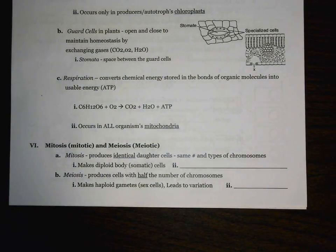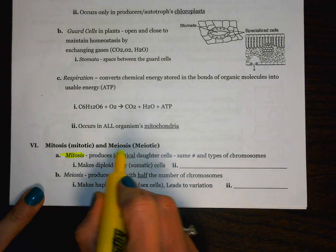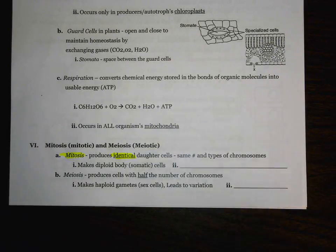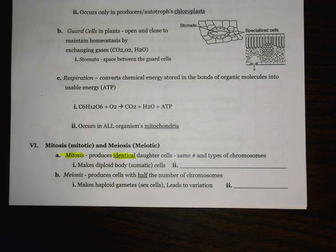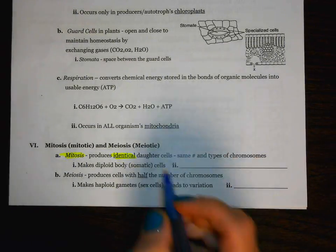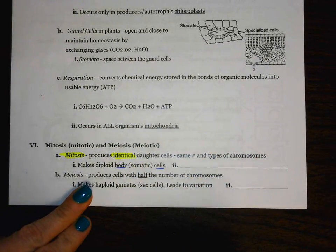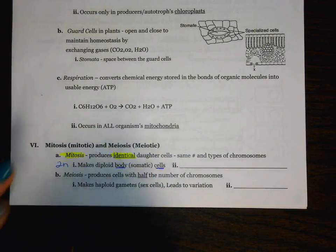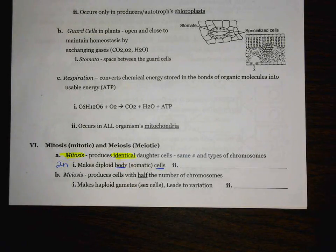First up we have mitosis. Mitosis produces identical copies — meaning they have the same number and the same types of chromosomes, so they are going to be clones of each other. If we're talking about human cells, the types of human cells capable of undergoing this are called body cells. Body cells have a full and complete set of chromosomes, so we call this the 2N number. One cell would have 46, it divides into two cells, and now those two cells also have 46 chromosomes.